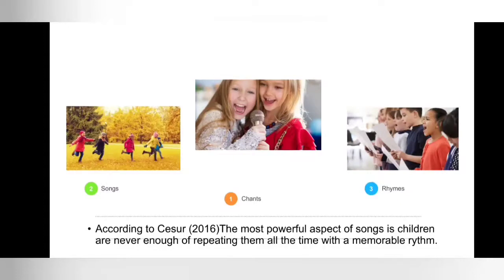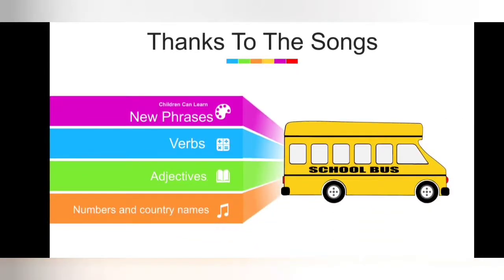According to Jester, the most powerful aspect of songs is that children never tire of hearing them, thanks to a memorable rhythm. As they like singing at a young age, they can recall songs by heart, and songs enable them to learn many different words. He emphasized that songs should be appropriate for children's age. Following trend movies like Frozen, Up, Tangled, or similar films is a good idea — kids are fond of such movies, and since those films use many songs, it makes it easier for kids to learn English and acquire new phrases, verbs, adjectives, numbers, and even country names.